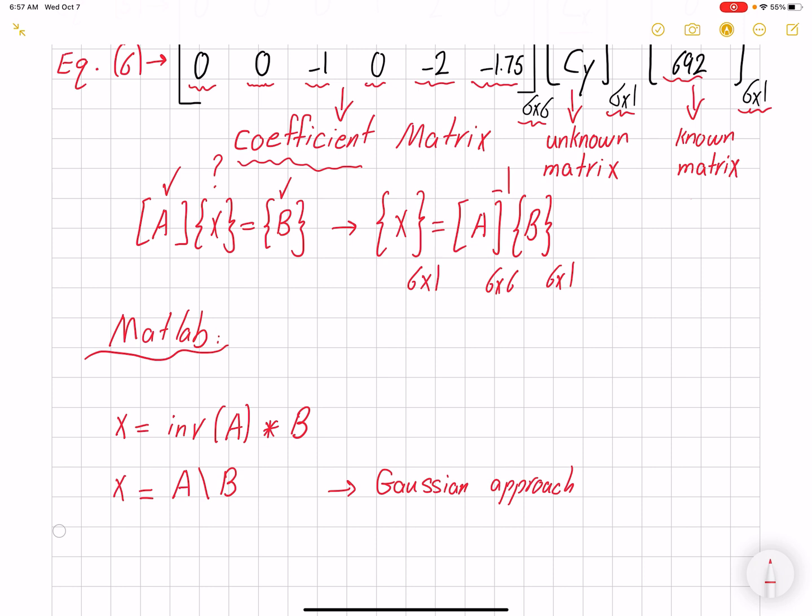So I recommend you use this A backslash B. These two are not the same—they're going to give us very similar results, but this Gaussian approach would never fail even if your matrix is populated with a lot of zeros.